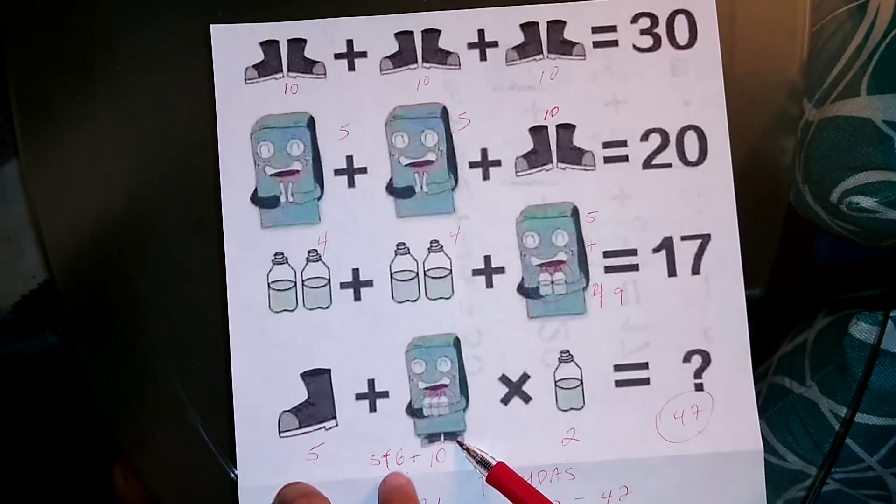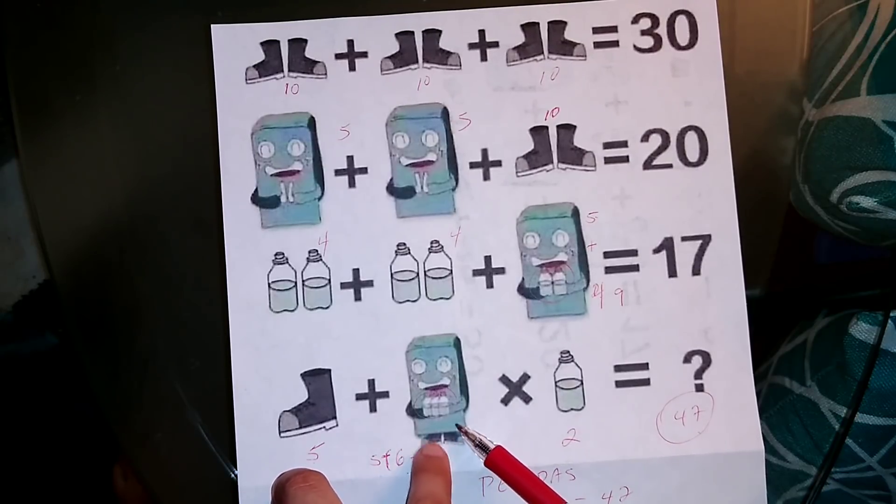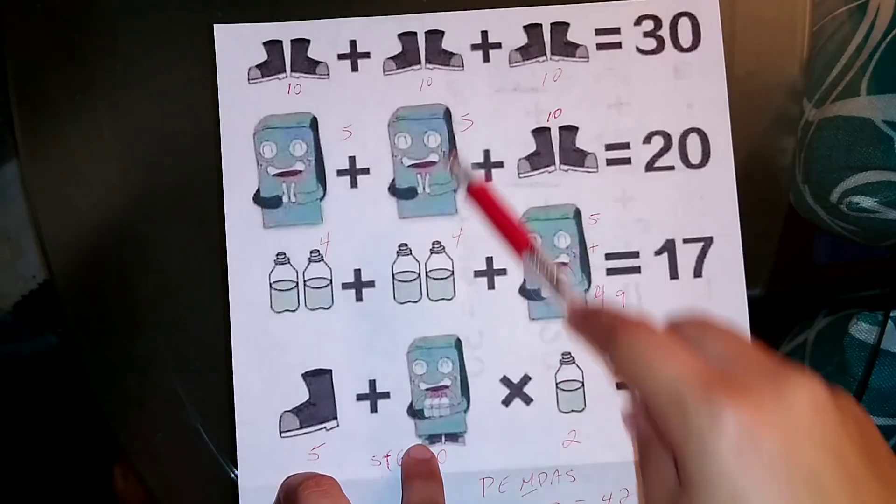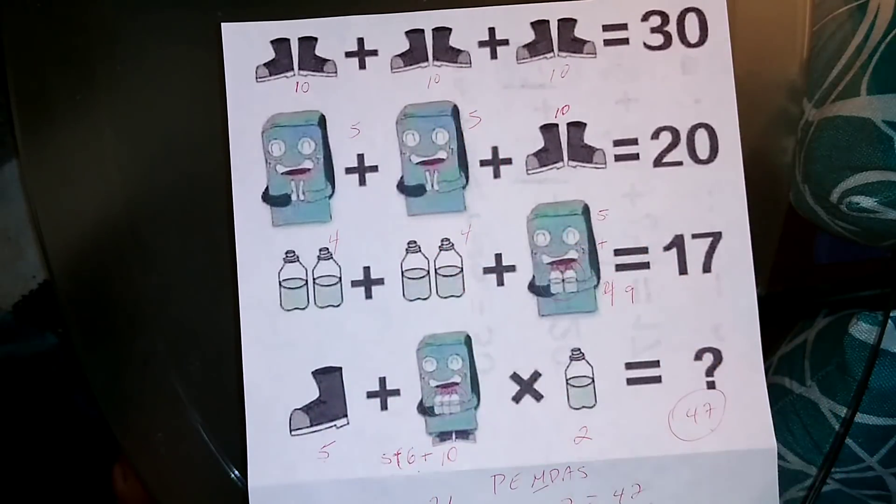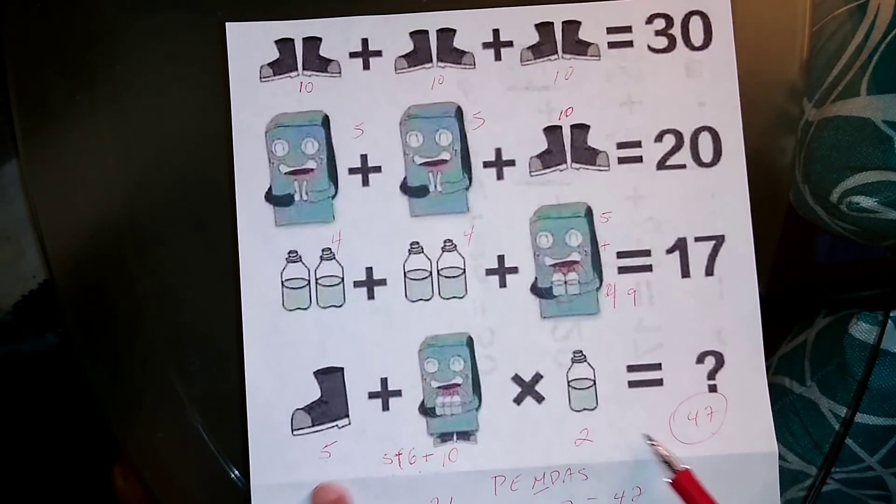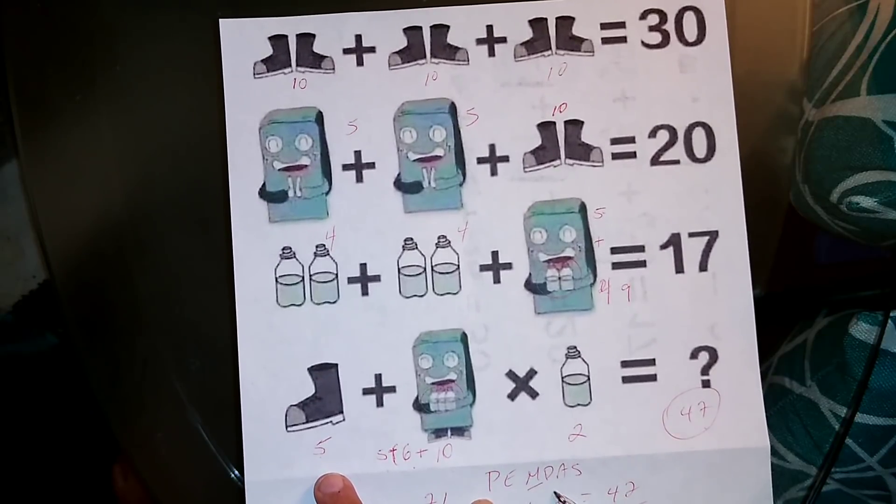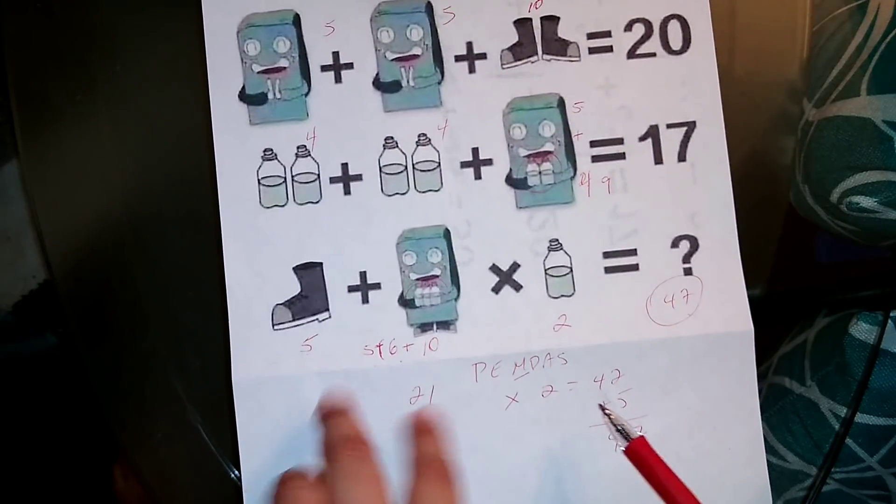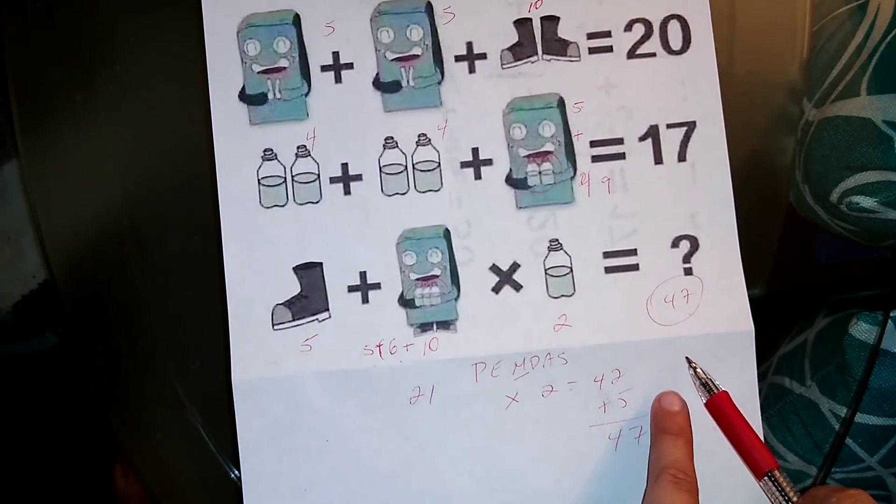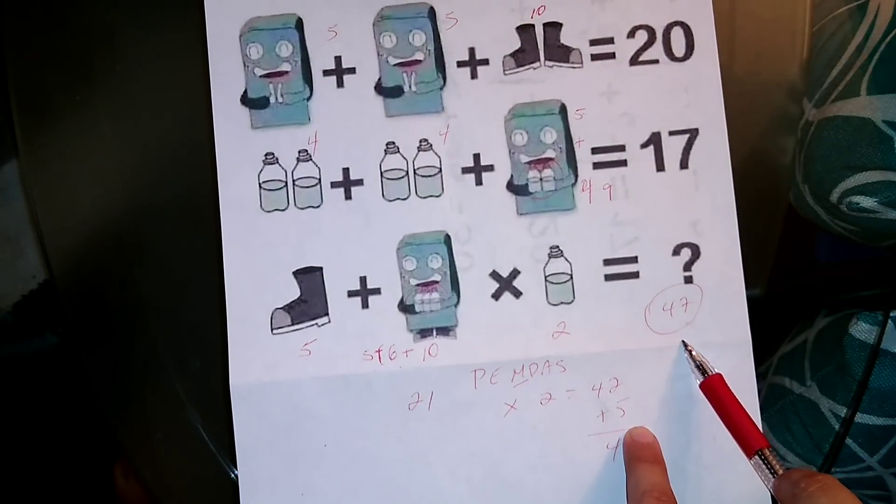And also he has a pair of shoes here—two pairs of shoes. Two pairs of shoes is 10. And then you just combine it all together. You first do PEMDAS: multiplication first, and then after multiplication follows addition. And then you add everything all together, and you'll get your answer.